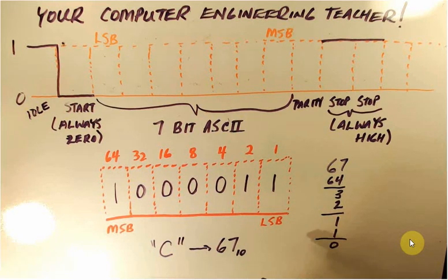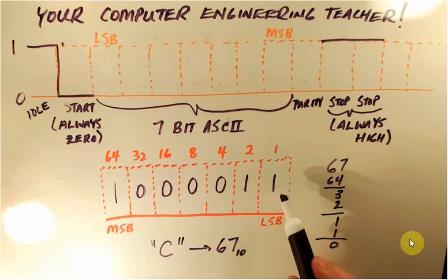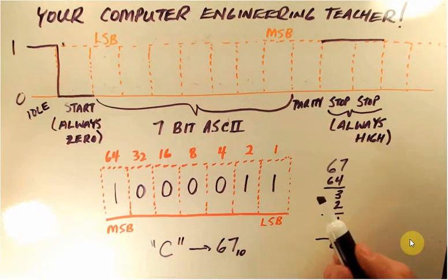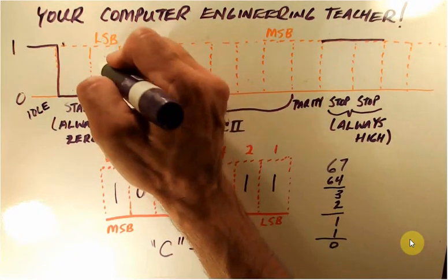Now when we go to transmit down a wire, what we do is we transmit the least significant bit first. So let's go in and fill in what we're going to send down a wire. So the least significant bit is a 1.